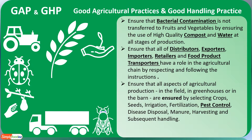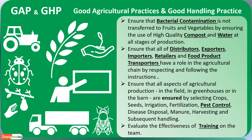GAP and GHP also ensure that all aspects of agricultural production — whether in the field, in greenhouses, or in the barn — are controlled. This includes selecting crops, seeds, irrigation, fertilization, pest control, disease disposal, manure, harvesting, and subsequent handling. All these aspects of agricultural production must be controlled by the ensuring factors of GAP and GHP.